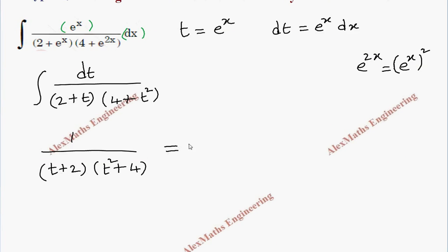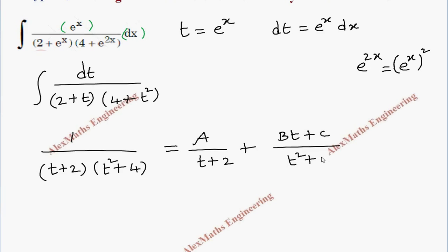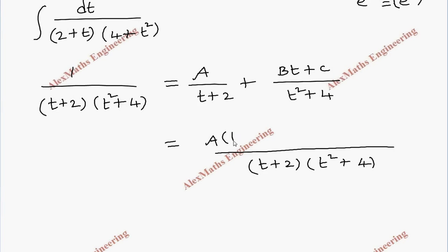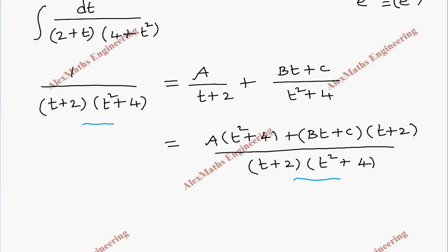So the linear term is t plus 2, giving us A over (t plus 2), and the quadratic term gives (Bt plus C) over (t squared plus 4). Taking the LCM, which is (t plus 2)(t squared plus 4), we get: A(t squared plus 4) plus (Bt plus C)(t plus 2). Since both sides have the same denominator, we equate the numerators, so 1 equals that entire numerator.